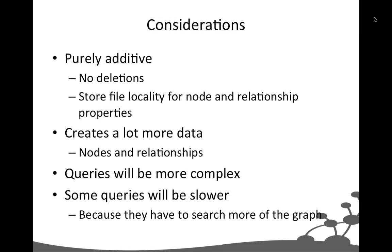This is one strategy for versioning graphs. The key insight is separating structure from state and versioning them independently, even though they're part of the same graph. The benefit of this technique is that on the whole it's purely additive — we don't ever actually delete nodes or relationships, we just add new ones.